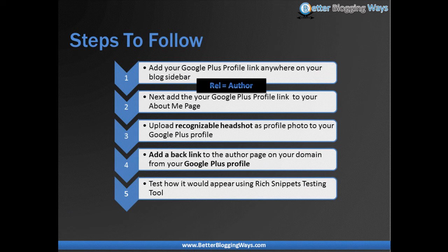Then you move on to your Google Plus profile, go to edit profile, and make sure that you have a very clear, recognizable headshot of you. You also need to add two links as part of the Google Plus profile — one link back to your website, and another link set to your author page. Once all that is done, you can use Google's test tool to check whether all the dots are connected.